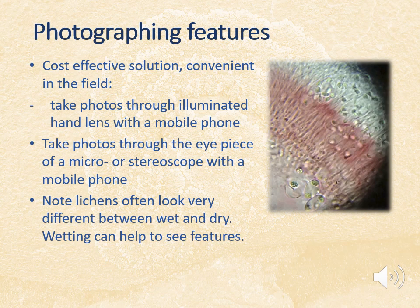A really cost-effective solution for photographing detail in the field is to take photos through the hand lens with a mobile phone. Once back in the laboratory you can do the same through the eyepiece of a microscope or stereoscope. Also remember that lichens can look very different when desiccated — a different colour, different texture, and some features won't be visible at all. Wetting the thallus can really help to see the detail. Carry a little flask of water in the field, and use rainwater rather than chlorinated tap water.